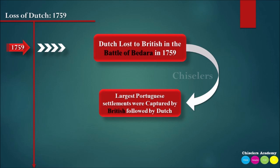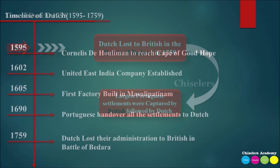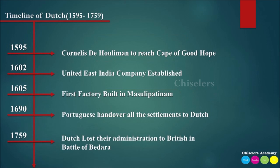The Dutch settlements were taken over by the British. Britain increased its power, while Dutch influence was reduced significantly. This marked the effective end of Dutch expansion in India.